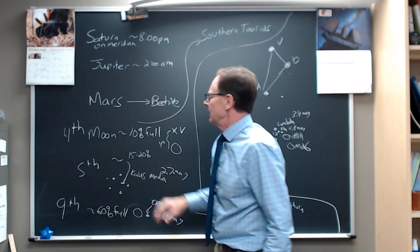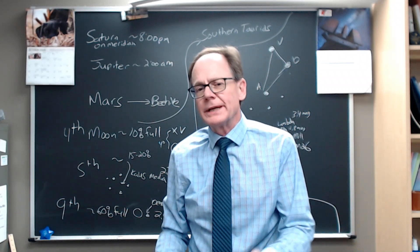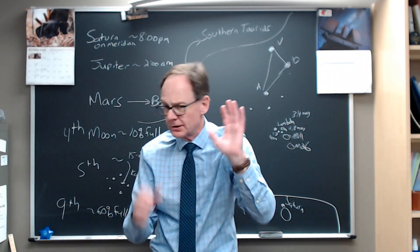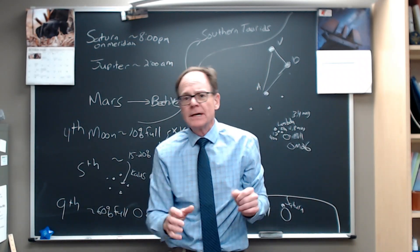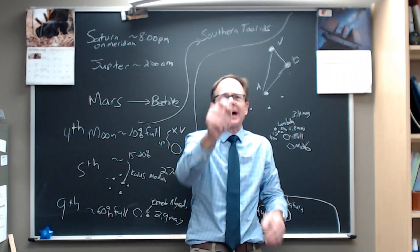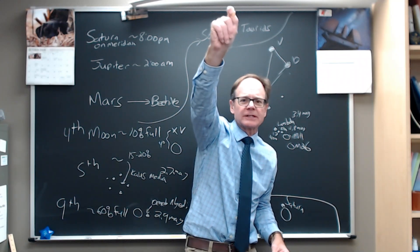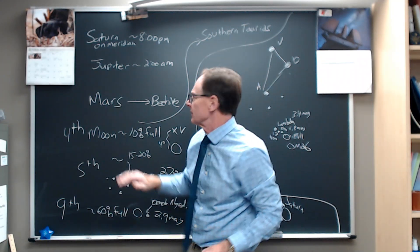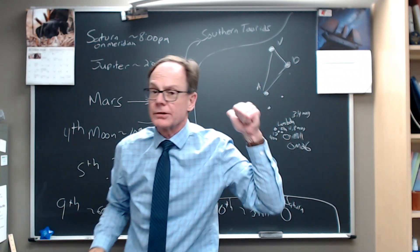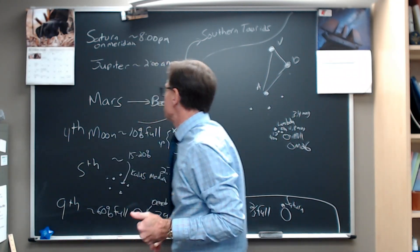So Saturn is on the meridian, the line that connects north to south at about 8 p.m. So you go out about 8 p.m. now and you look straight south and Saturn will be the bright object that's kind of yellowish in that direction. So that's a great chance to see Saturn. The moon's going to meet up with it later in the week. So we'll catch back up with Saturn.